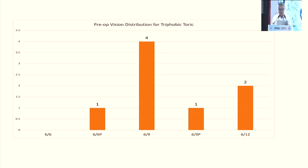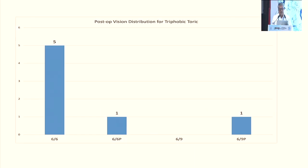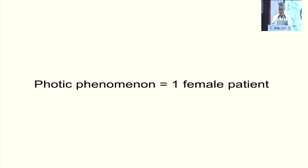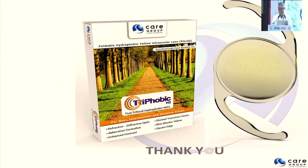In the toric group as well, pre-op vision showed that most patients of the trifocal toric achieved 6/6 vision post-operatively. One female patient had a photic phenomenon. Thank you very much.